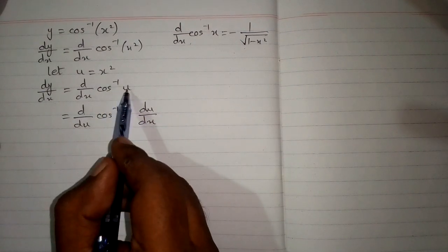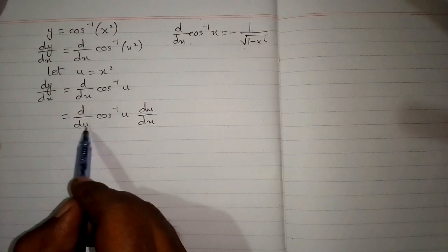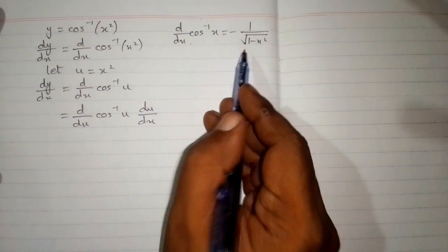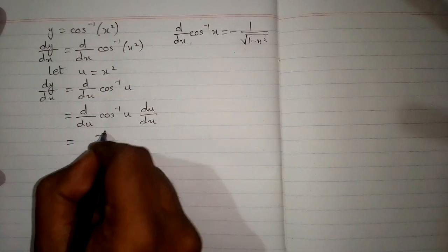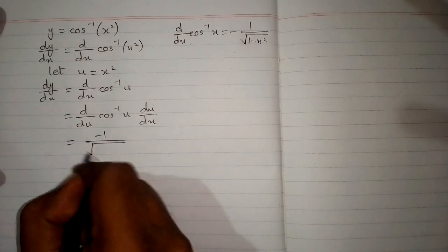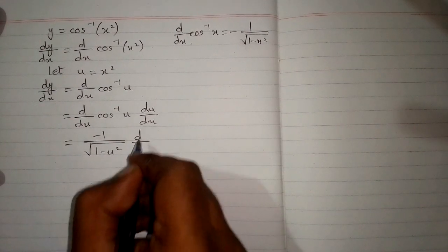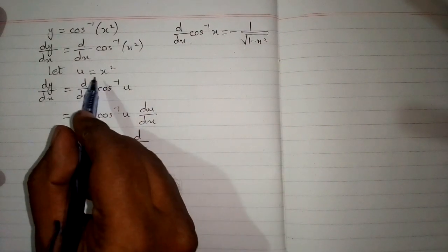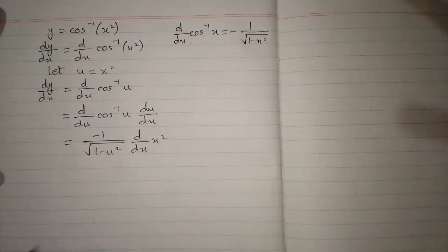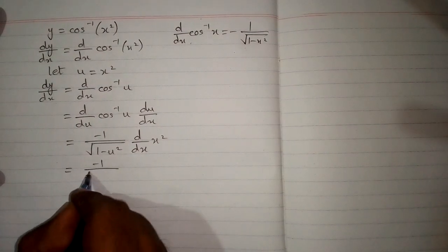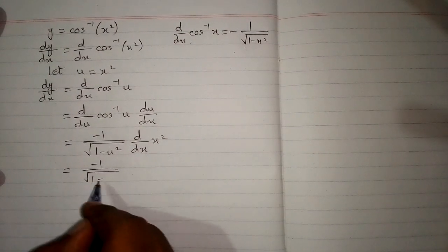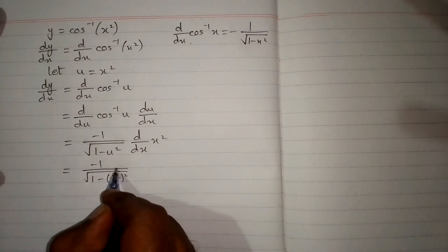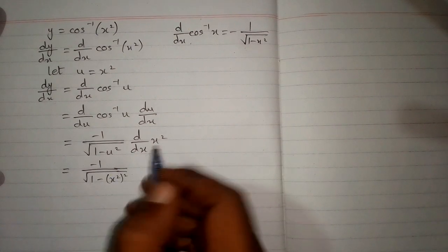Now we can differentiate cosine inverse u because we have du over here. So we will apply this formula and we have minus 1 upon square root of 1 minus u square, multiplied by du by dx. So we put the value of u, which is x square, over here.